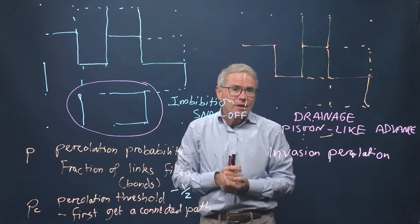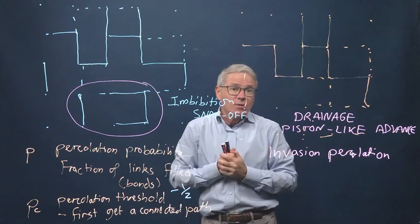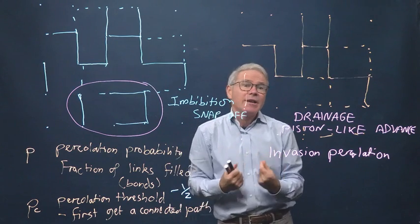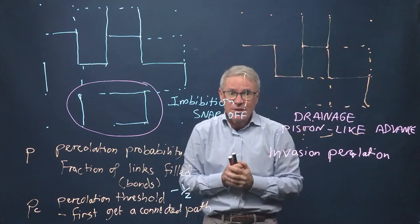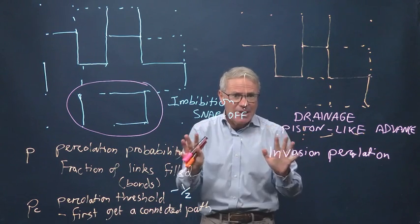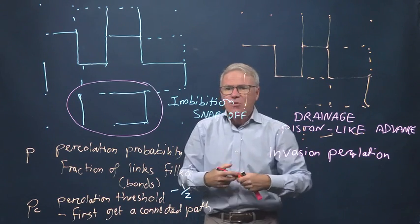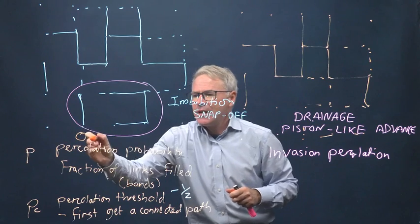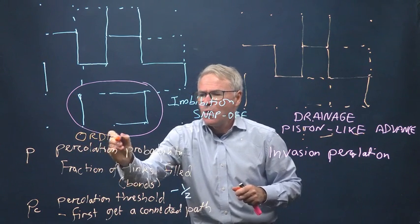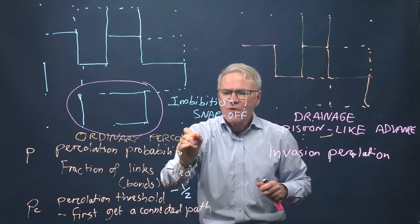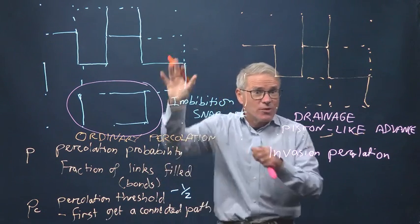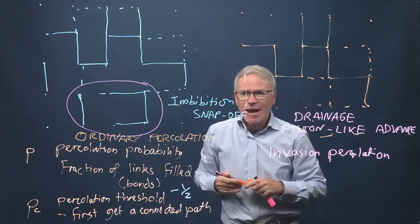So I'll finish there, but later what we'll do is we'll begin to quantify in terms of equations and conductance what this really means in terms of flow. But at the moment the key concept is this: we have percolation which we can call ordinary percolation, which is the random filling or filling in order of size but spatially random,